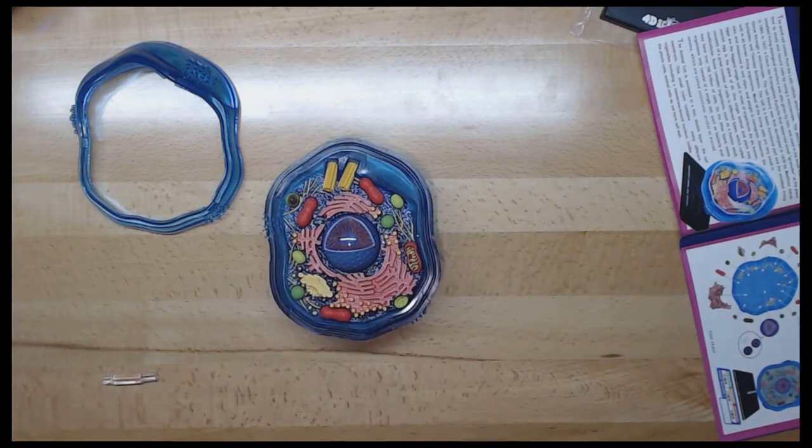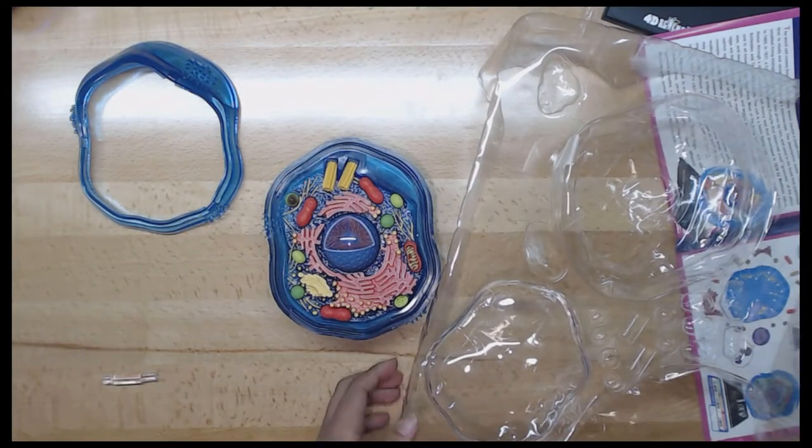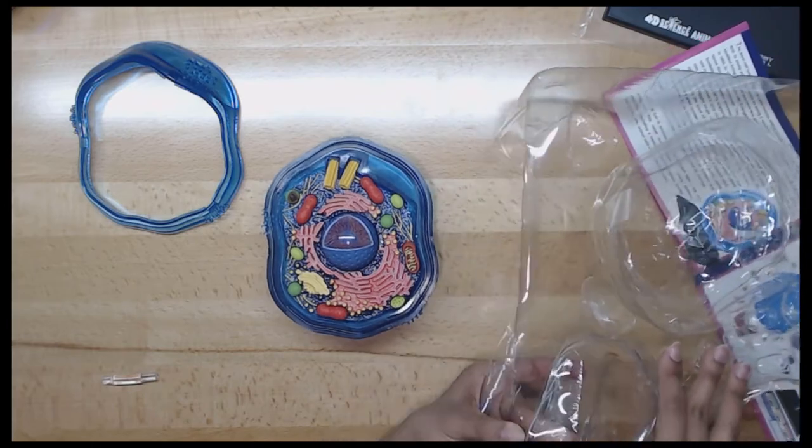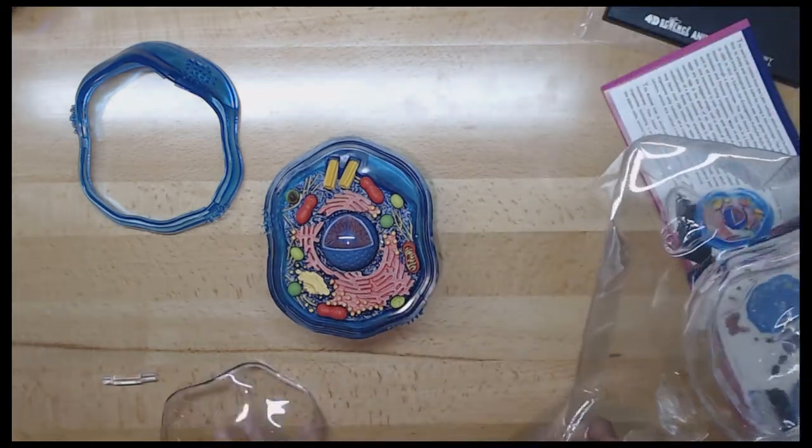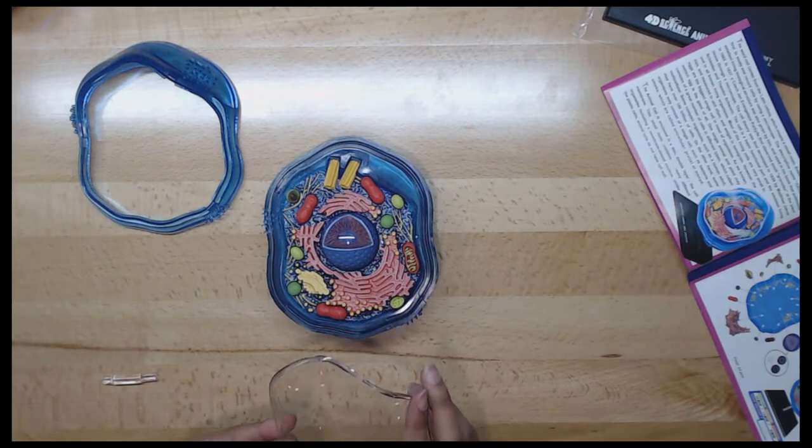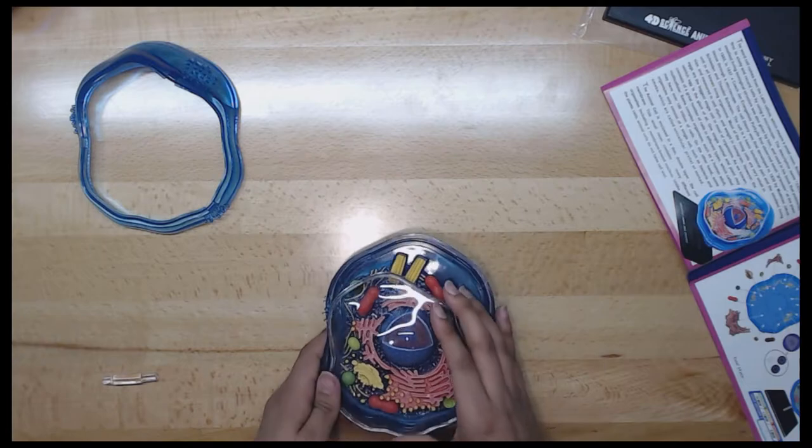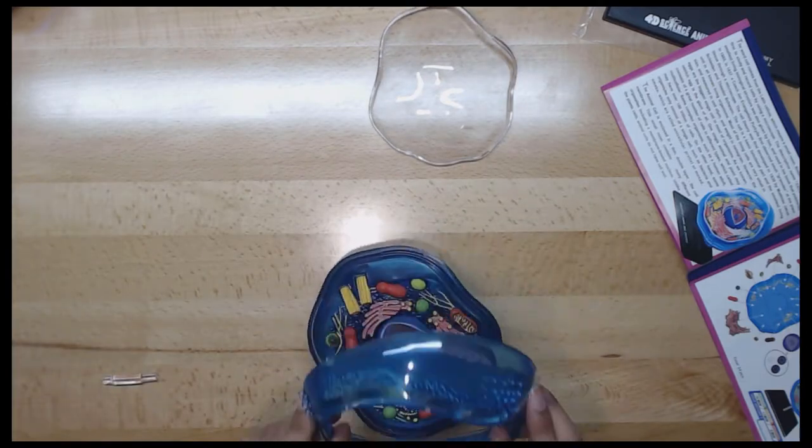All right, and that is all the information for the animal cell. I gotta say, there were a lot of different terms and names I had to look up, so I'm actually pretty excited. I now know how to pronounce more scientific things, and I learned quite a lot about animal cells. It does share some similarities with the plant cell, but there are some differences as well.